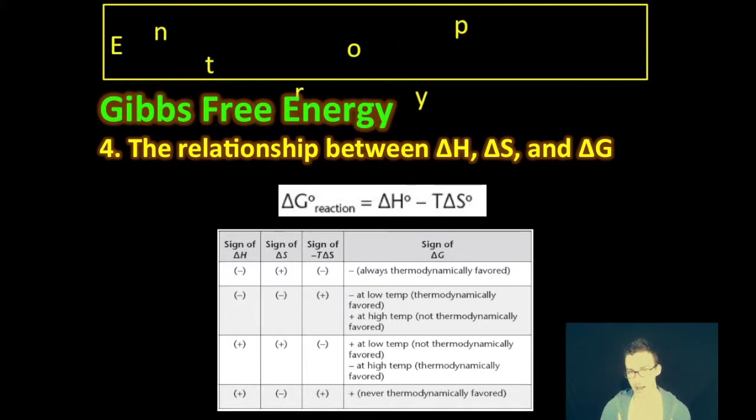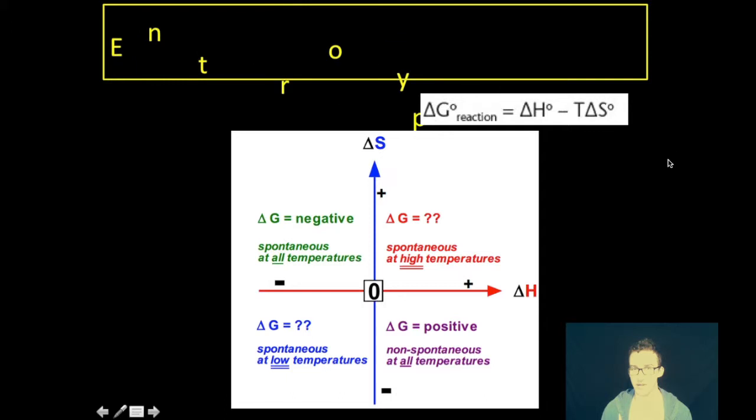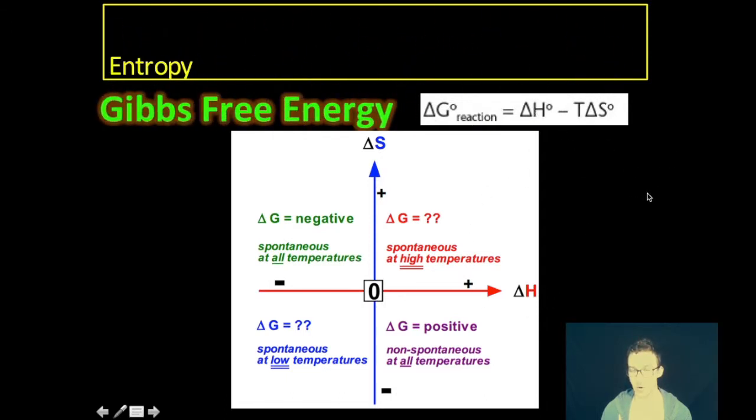And you're given a table format of the signs of those things and what it means in terms of thermodynamic favorability. But I like to think of it in terms of this coordinate plane here, where if you have entropy on your y-axis and enthalpy on your x-axis, generally speaking, then your favorable conditions are when you have positive entropy change or positive delta S and negative enthalpy change or negative delta H. And so anytime you have both of those very favorable conditions, your delta G is always going to be negative. And again, as you think about this equation, which relates those variables, when this is going to be negative, and you subtract from it something that's positive, you're going to get something that's always going to be negative, and therefore always thermodynamically favored or spontaneous.